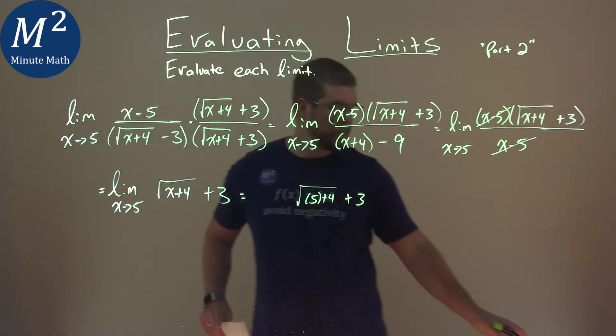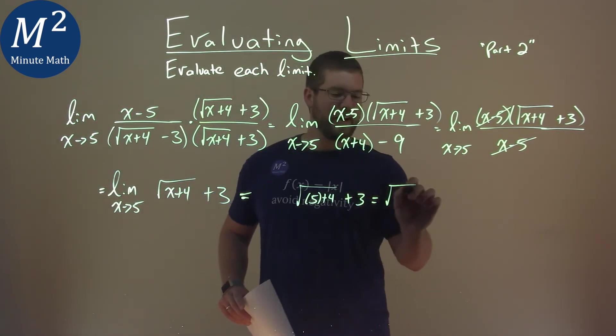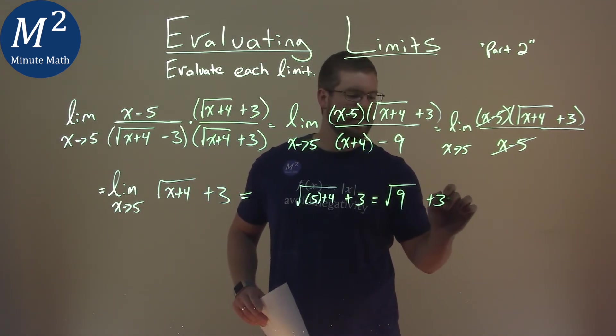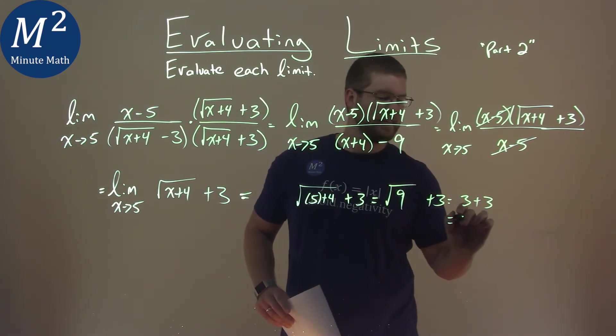I don't need to write limit anymore. Ignore that extra space. 5 plus 4 is 9, square root of 9 plus 3. And square root of 9 is 3, so 3 plus 3 is 6.